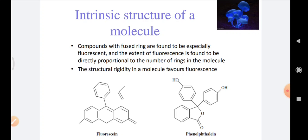First, the intrinsic structure of a molecule. In the intrinsic structure, we start with conjugation. Conjugation means the presence of alternating double and single bonds in a structure. As discussed in previous lectures on chromophores in UV, chromophores are unsaturated groups that absorb UV light. Similarly, fluorophores are groups which are conjugated and show absorbance in UV light. So, conjugation can increase fluorescence.